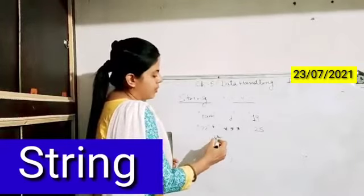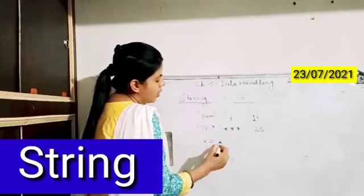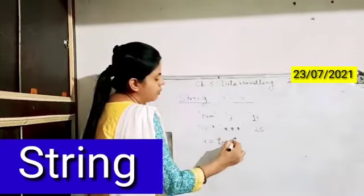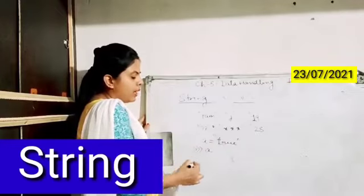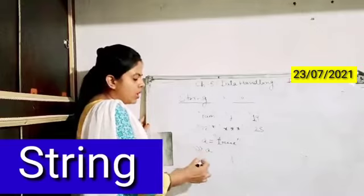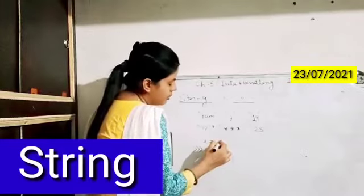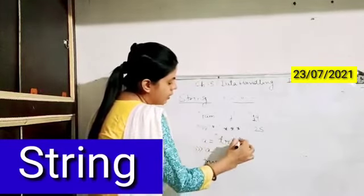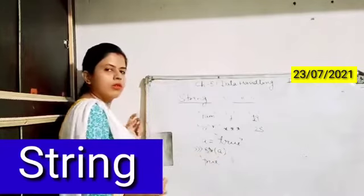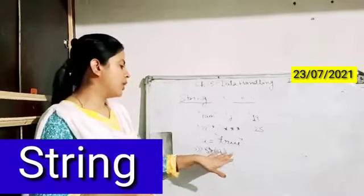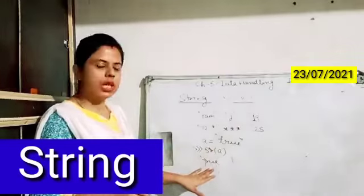If you want to convert anything into a string, we use the str() function. For example, if a = True and you write str(a), it will give you the output 'true' as a string. So to convert any particular thing into a string we can use the str() function — any number or value can be changed to a string. For declaration of any string you need to use single or double quotes.